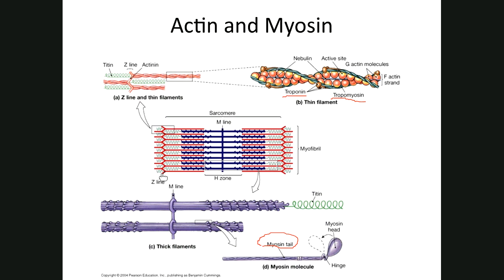Now the sliding filament theory: shortening of the sarcomere. There are millions of sarcomeres in your muscle cells, and each one shortens from Z-line to Z-line — the Z-lines are pulled toward the middle until the myosin butts up against them. The actin and myosin myofilaments slide past one another, and this action involves the myosin head.